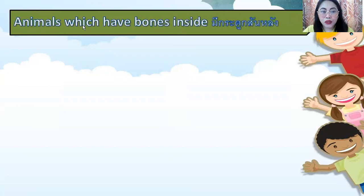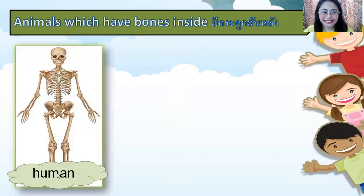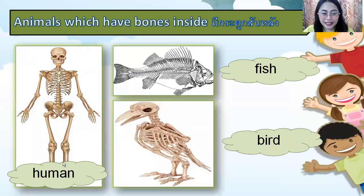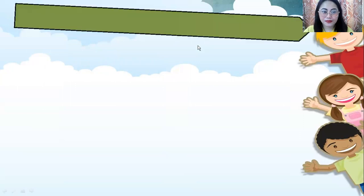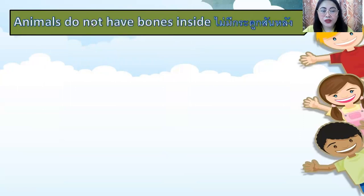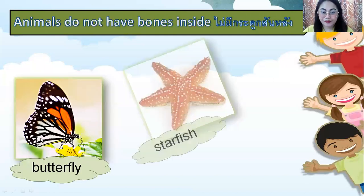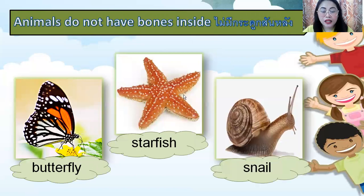Animals which have bones inside include human, fish, and birds. These are animals which have bones inside. Animals that do not have bones inside include butterfly, starfish, and snail.